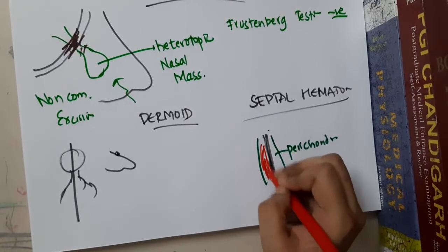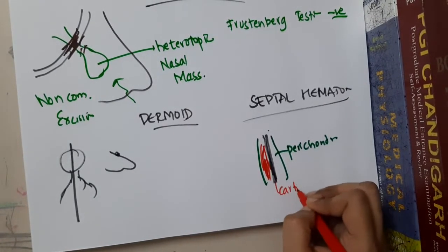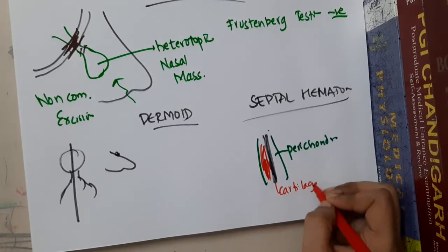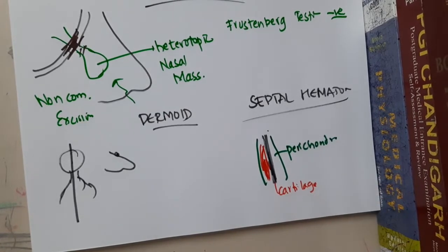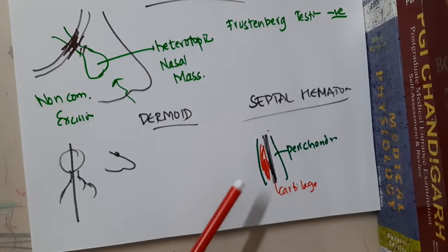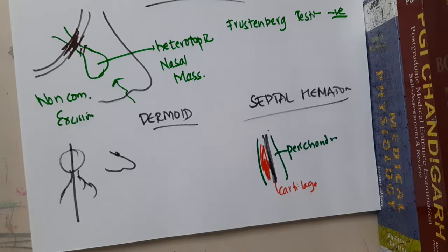If there is hemorrhage or hematoma — a collection of blood — occurring between the cartilage and the perichondrium, that is what we call a septal hematoma.